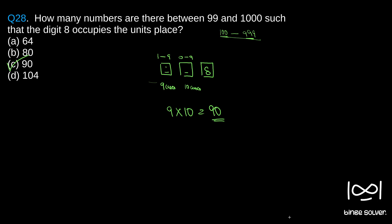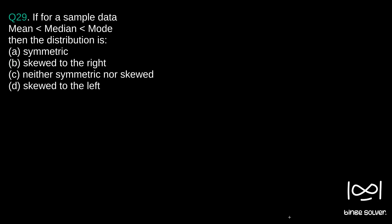Next question, question 29. If for a sample data mean is less than median is less than mode, then the distribution is: options are A symmetric, B skewed to the right, C neither symmetric nor skewed, D skewed to the left.